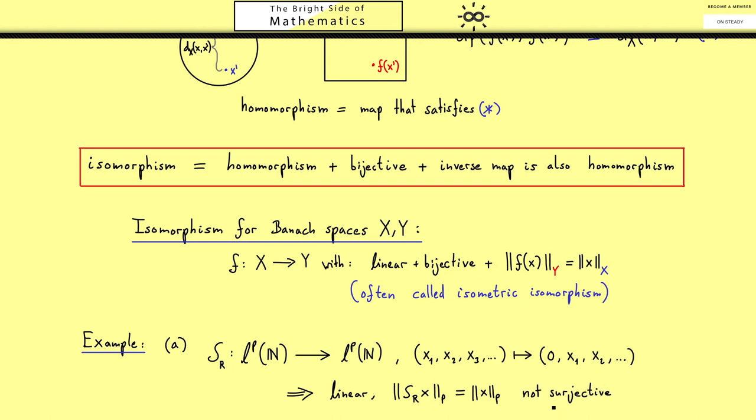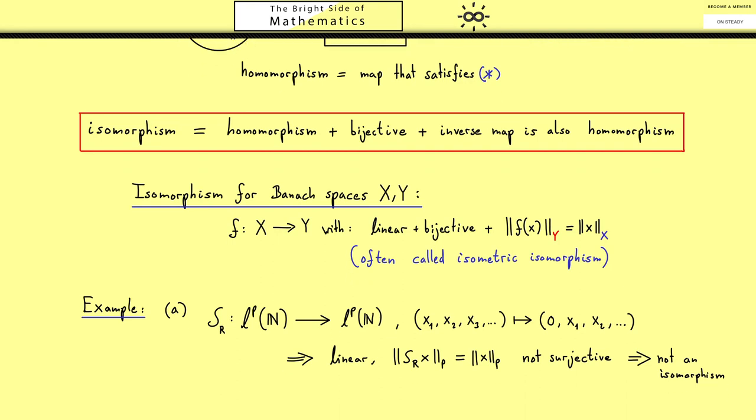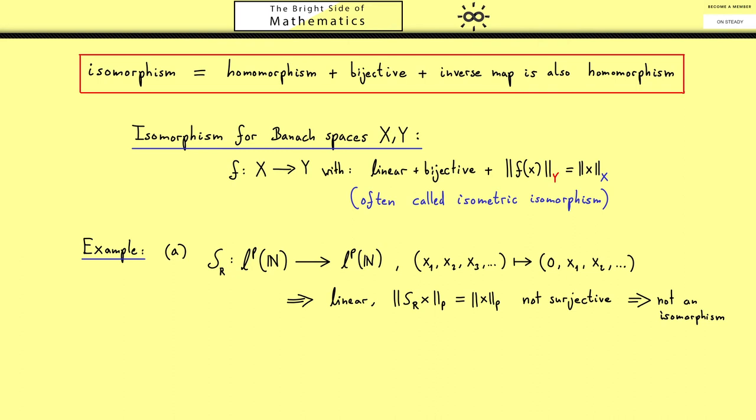More concretely, it's not surjective because we can't get any other numbers here than a 0. Therefore this is not an isomorphism. For this reason, let's change the example a little bit such that we get an isomorphism.